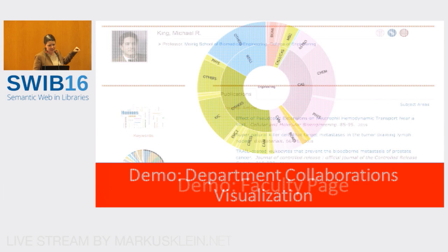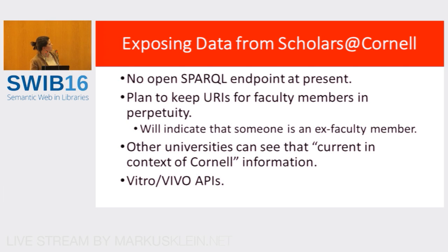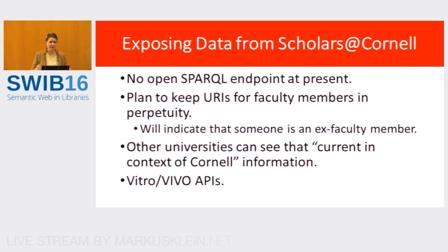Going through the screenshots — there are screenshots in there just in case. For exposing data going forward, we don't have a SPARQL endpoint at present, but built into Vitro and Vivo are a variety of APIs, and that's something actively being developed. We want other universities to start seeing they can use this data in the context of Cornell's scholarly output — maybe Harvard wants to see how it compares. We're also keeping those URIs now in perpetuity, whereas with the previous Vivo, if a faculty member left Cornell, we basically no longer managed the URI.